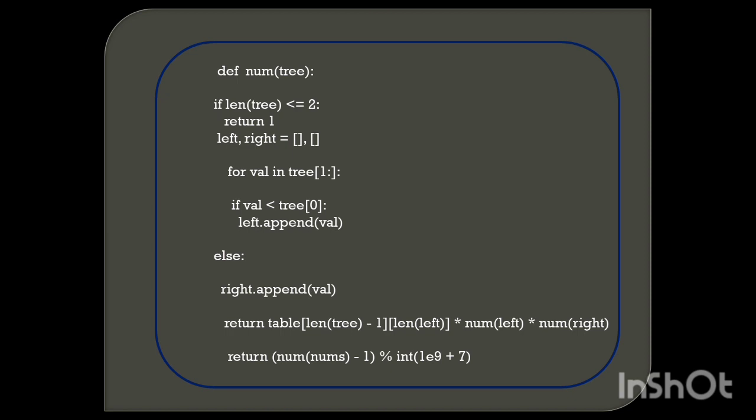Next, we define the helper function num_of_tree. If the length of the tree is less than or equal to 2, return 1. We initialize left and right as empty lists. For each value in tree[1:], if value is less than tree[0], append to left, else append to right. We return table[len(tree)-1][len(left)] multiplied by num_of_tree(left) multiplied by num_of_tree(right). Finally, return num_of_nums minus 1 modulo (10^9 + 7).